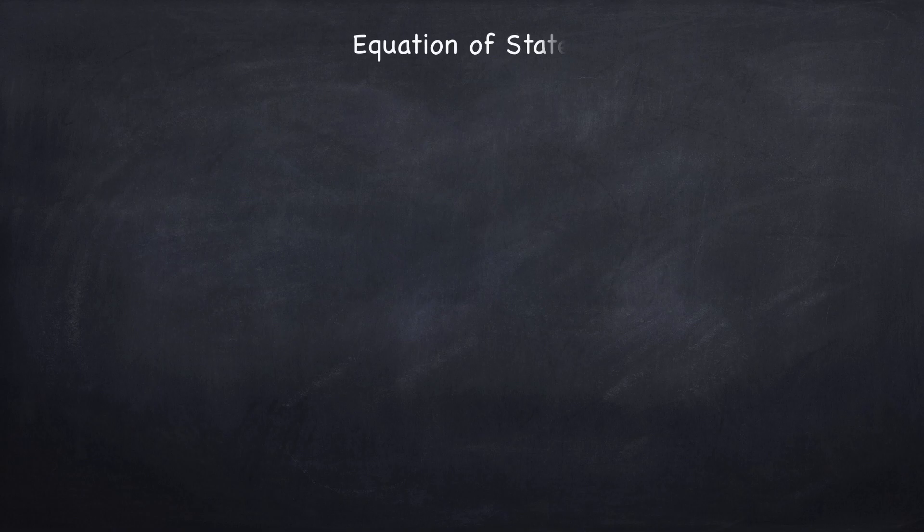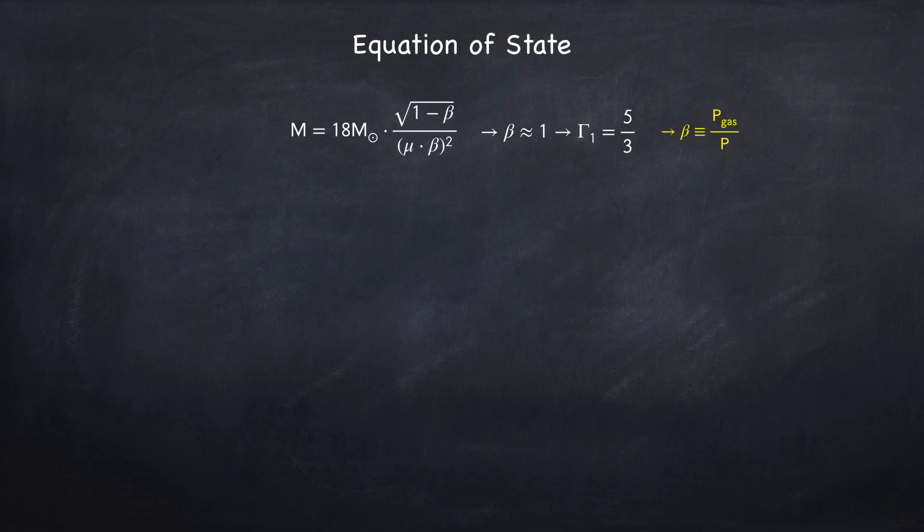So let's first figure out the equation of state of the material in the sun. In Stellar Physics 3b we found a relationship between the mass of a star and the fractional gas pressure, which I've called beta, which is just the gas pressure divided by the total pressure. If we plug in one solar mass into this, we'll find that beta is very close to one, so we're just going to take beta to be one.